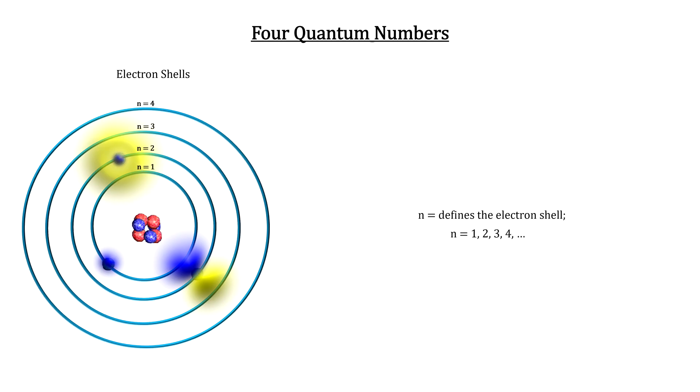The electron's energy is quantized into electron shells designated by the letter N. It determines the distance the electron is from the nucleus.